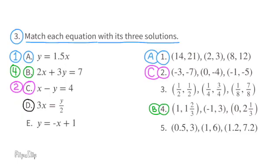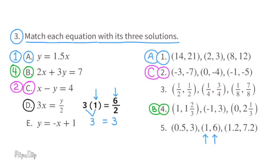D: 3x equals y divided by 2. 3 times 1 equals 6 divided by 2. 3 times 1 is 3 and 6 divided by 2 is 3. 3 equals 3. The ordered pair with 1 and 6 can be found in the number 5 solutions. Solution number 5 is a match with equation D.